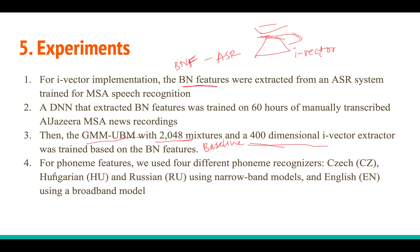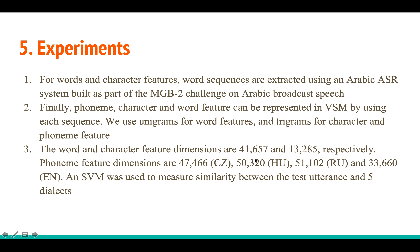For the linguistic feature extraction, phoneme features are extracted using four phoneme recognizers trained on Czech, Hungarian, Russian, and English data. These phoneme recognizers extract phoneme features for the MGB3 dataset. Word features are extracted using an Arabic ASR trained on MGB2 broadcast speech data. From word-level ASR, characters can also be extracted by splitting each word.